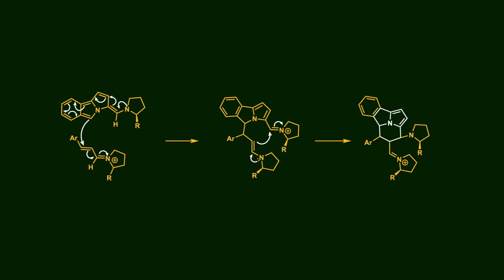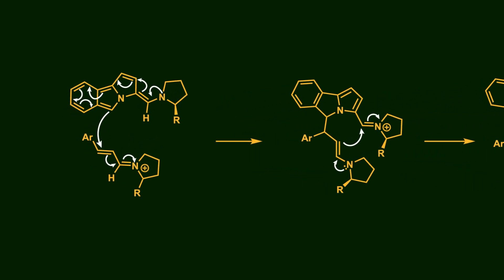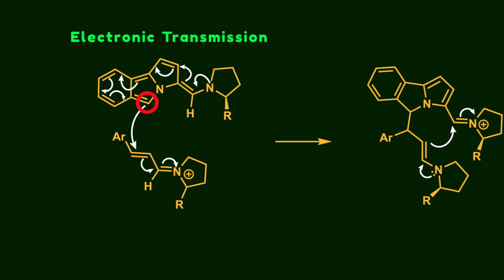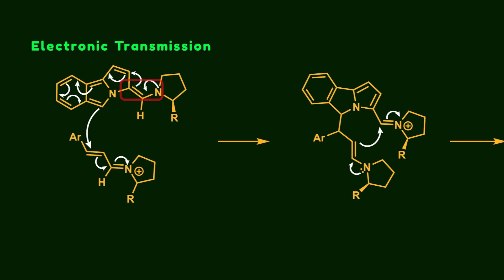The first step of the cycloaddition reaction begins with the electronic transmission of pi electrons in the 12π system, allowing it to attack the 2π component from this carbon atom. At this step, the enamine moiety in the 12π component is converted into an iminium ion, while in the 2π component, the iminium ion transforms into an enamine functional group, essentially the opposite of the previous step.